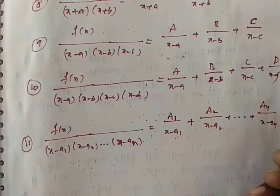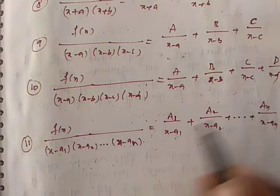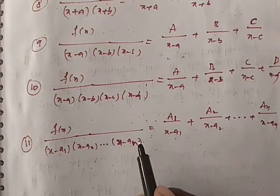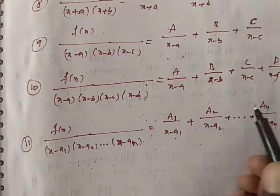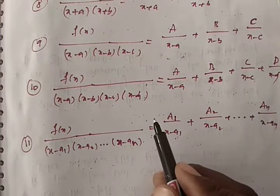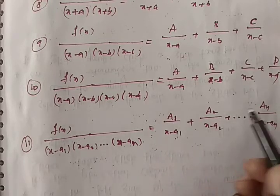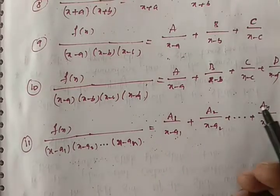I am using subscripted constants A1, A2, A3 instead of letters A, B, C because the alphabet only has 26 letters and we don't know whether n is less than or greater than 26. So using subscripted constants is sufficient and general — you can write any constants here.